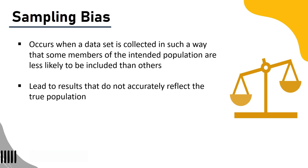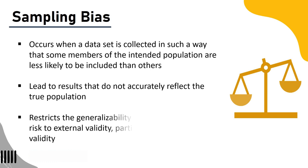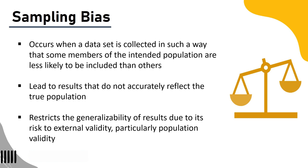Sampling bias restricts the generalizability of results due to its risks to external validity, particularly population validity. In other words, the only groups to whom results from biased samples can be generalized are those with similar characteristics.